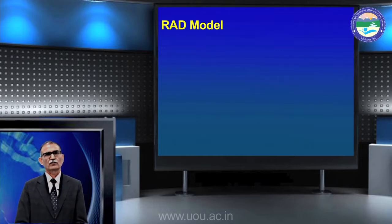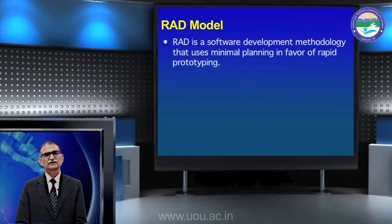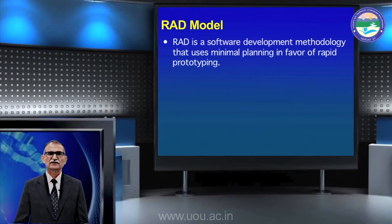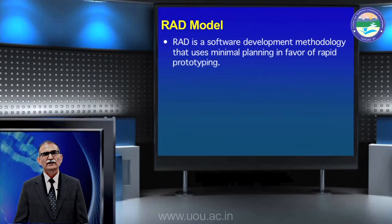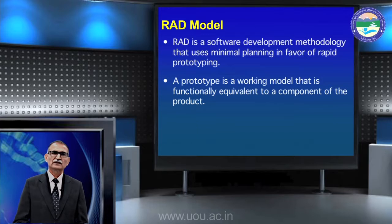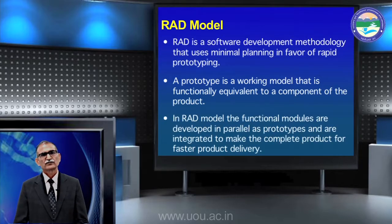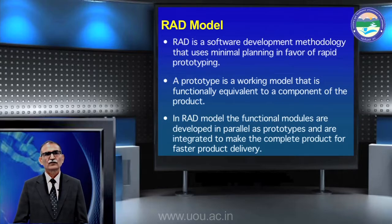In the same series of fast application deployment, the next model is the Rapid Application Development (RAD) model. This is a software development methodology that uses minimal planning in favor of rapid prototyping — quickly building a working prototype for the customer. You can use tools like Microsoft Visual Studio and CASE tools to give the customer a working framework without writing code. The prototype will resemble what the final product will look like, though it may not have all the final product's functionality. In the RAD model, functional modules are developed in parallel as prototypes and integrated to make the complete product for faster delivery.